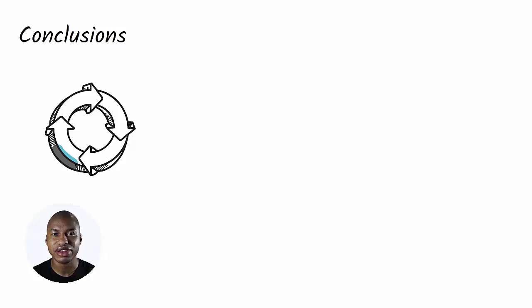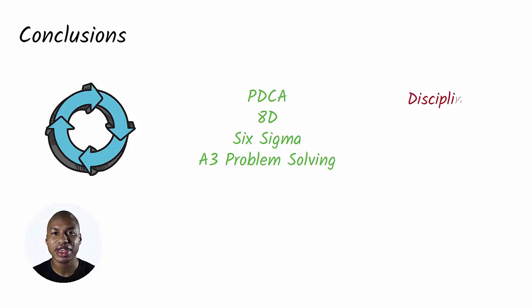Conclusions. The PDCA cycle is believed to be the basic improvement cycle. The overlaps of the phases of the PDCA cycle with other improvement cycles, such as 8D, Six Sigma, and A3 problem solving should be evident. Regardless of the improvement cycle you would like to adopt, remember that discipline in not jumping the steps is fundamental, and you have to dedicate the right time for each phase.